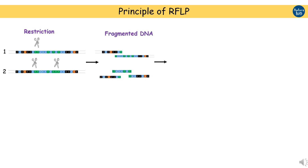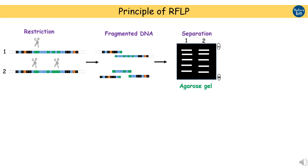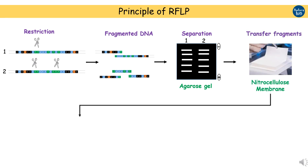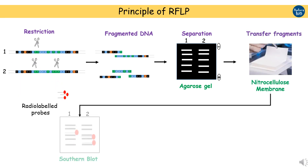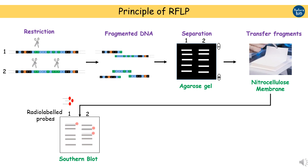These restriction fragments are separated on agarose gel. Based on fragment size, smaller fragments move faster and travel longer distances towards the positive electrode. But at this stage we cannot see the differences between the two individuals. The restriction fragments are then transferred to a nitrocellulose membrane, and radiolabelled probes are applied. The probes are short DNA sequences which are complementary to a specific DNA locus of interest. This is called Southern blotting, in which DNA probes bind to their complementary DNA on the membrane.